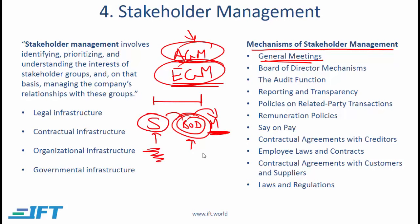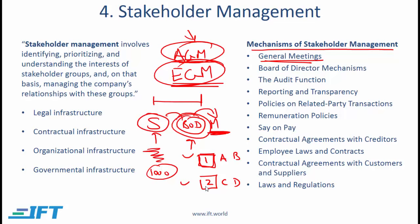Consider an example with two board seats up for election. Under straight voting, a minority shareholder with 1,000 shares votes those 1,000 shares for each seat separately. Under cumulative voting, the shareholder can combine votes — using all 2,000 votes for a single preferred candidate. Cumulative voting therefore gives minority shareholders greater influence.